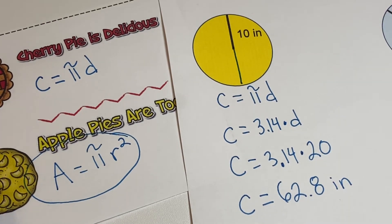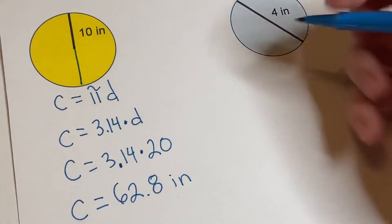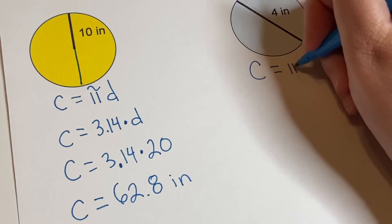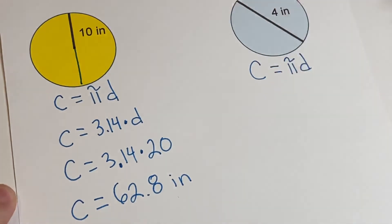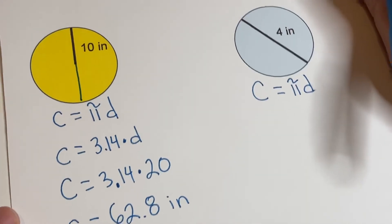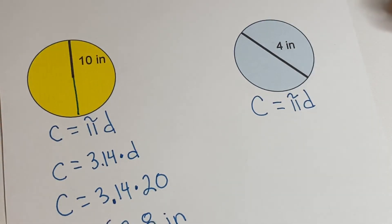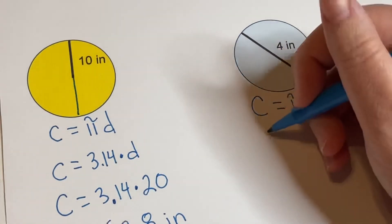So there's no squaring, it's a distance. Let's look at our other one. We're going to use the same formula: c equals pi d. Now we already have the diameter, so we actually don't have to do anything. This one is a little bit less than that one.